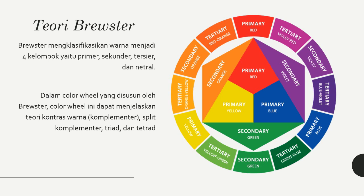Teori Brewster pertama kali dikemukakan pada tahun 1831. Teori ini menyederhanakan warna-warna yang ada di alam menjadi empat kelompok, yaitu warna primer, warna sekunder, warna tersier, dan warna netral. Kelompok warna ini sering disusun dalam lingkaran warna Brewster atau Color Wheel Brewster, yang mampu menjelaskan teori kontras warna: komplementer, split komplementer atau komplementer silang, triadik, dan tetran.